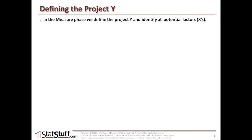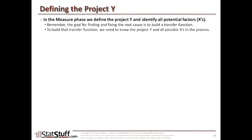Now let's talk about how you can go about defining what the project Y is. In the measure phase, that's when we need to define the project Y and also identify all the potential factors — the Xs that are part of the transfer function. Our overall goal is to find and fix the root cause. To do that, we need to build the transfer function to understand what controls the output we want to improve, which means knowing the project Y and all possible Xs that influence it.